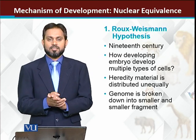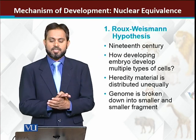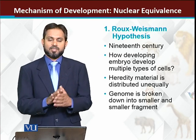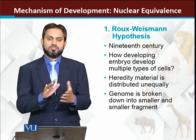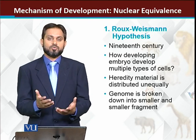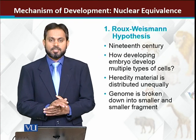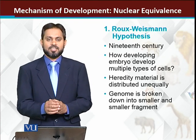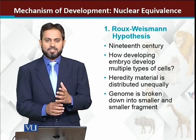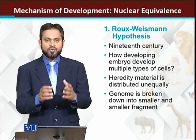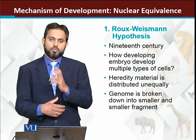For different scientists, different theories emerged. One important hypothesis was the Rox-Weisman hypothesis. Rox and Weisman were two German scientists — embryologists. They gave the idea that as the embryo keeps on dividing, different cells receive different parts of the genome.